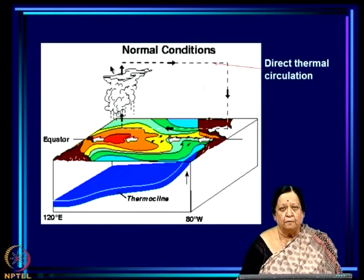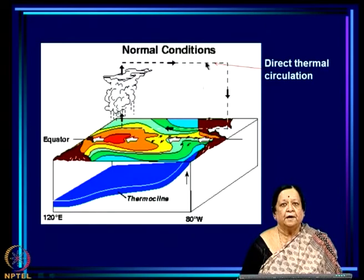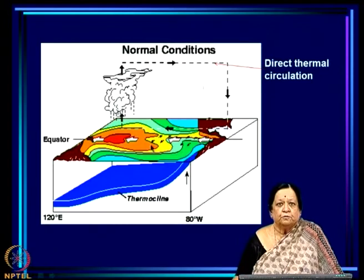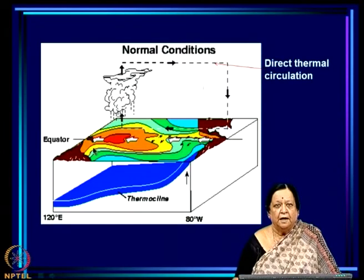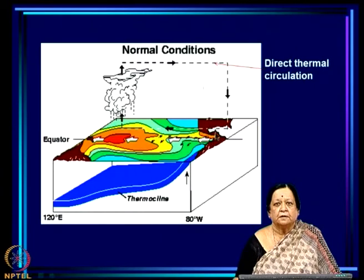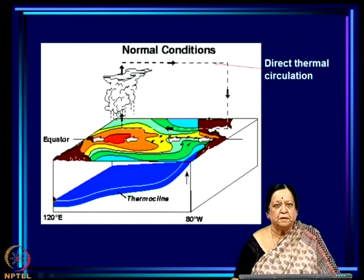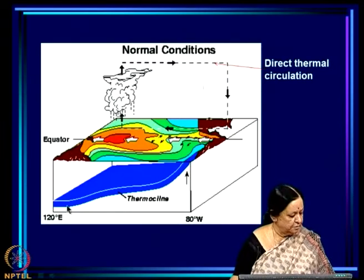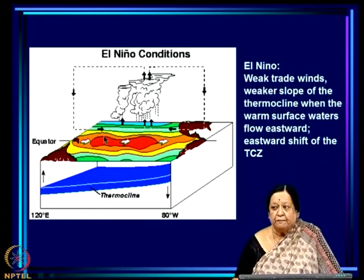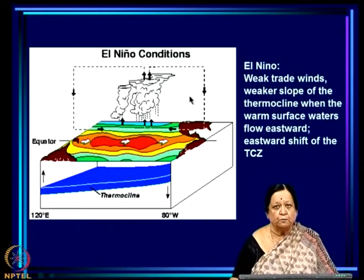These are normal conditions. During normal conditions you have convection primarily over the west Pacific in the atmosphere — a direct thermal circulation with a descending zone over the east. The SST is warm over the west, with rising and convection, and very cold along the coast of America with sinking. The thermocline is much deeper in the west than in the east — this is the famous tilt of the thermocline. These are normal conditions averaged over several years over the Pacific.